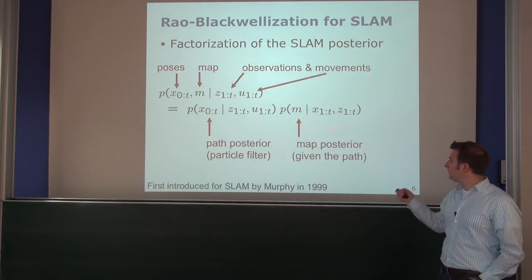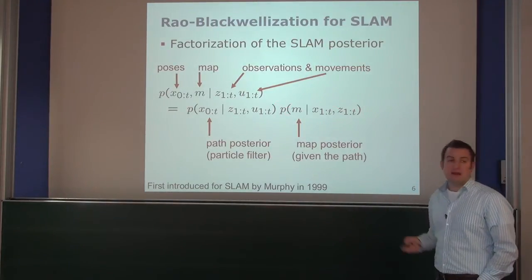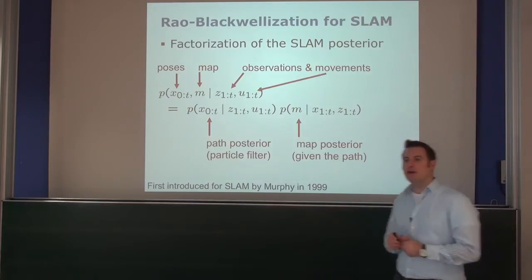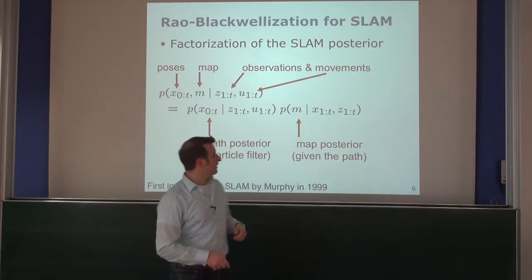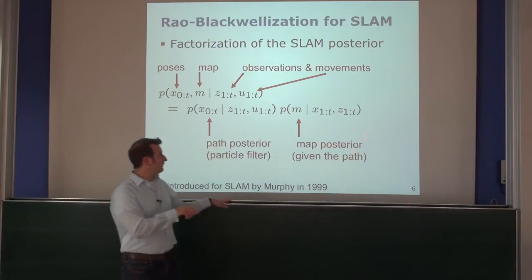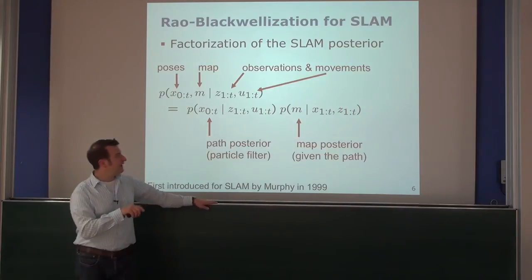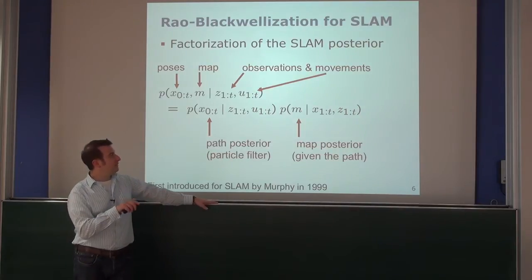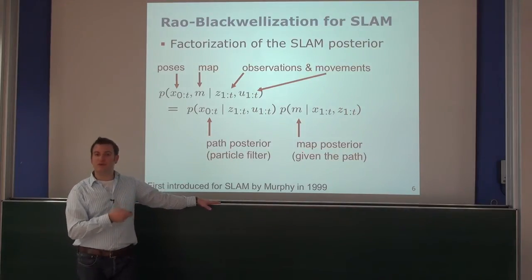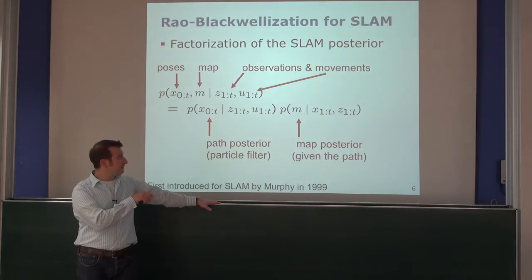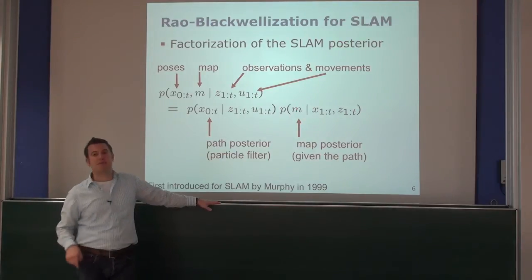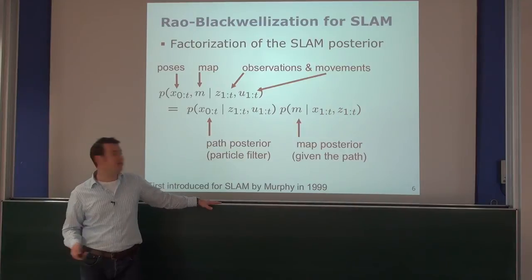Then we have the second belief — the map posterior given the poses of the robot — and the question is how we can actually estimate that. We expect this to work differently in the grid-based setting because the map representation is different.